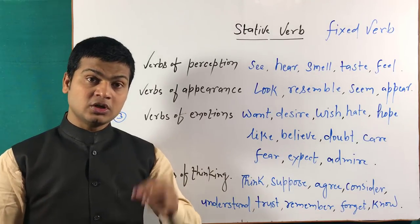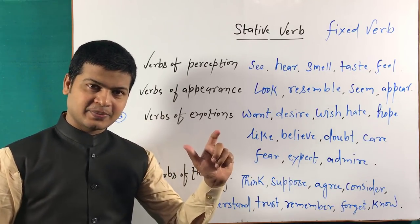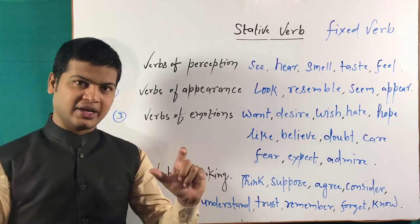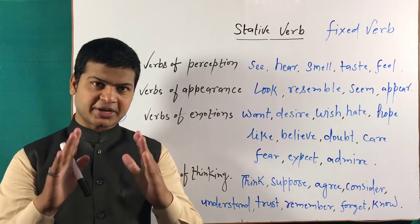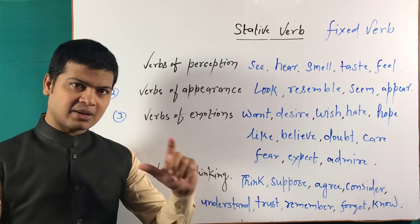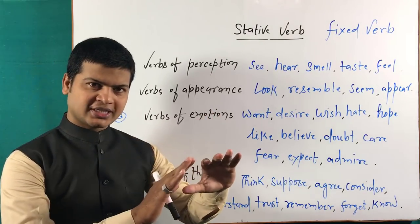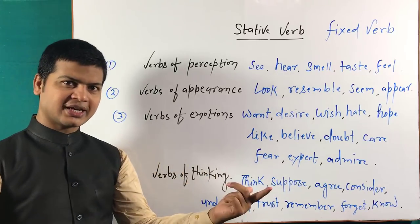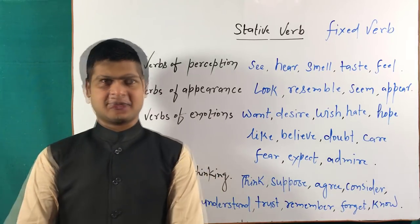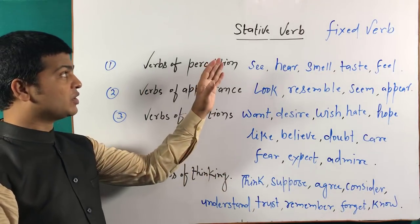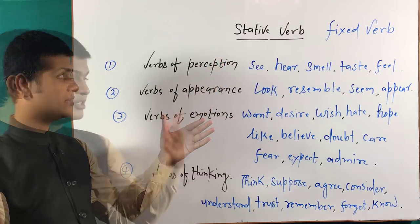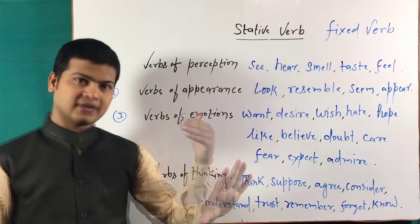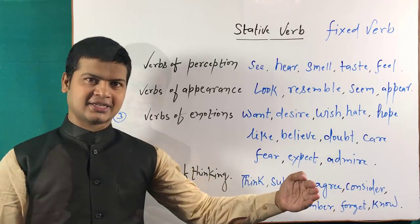Agar ise Hindi mein kahun to 'asthaayi kriya', aur agar Urdu mein kahun to 'mukarrar fe'l'. Yaani friends, is tarah ke verb ek permanent kaam ko bina kisi koshish ke lagataar hone ko batate hain — ye sthaayi roop se hone wale kaam ko explain karti hai.